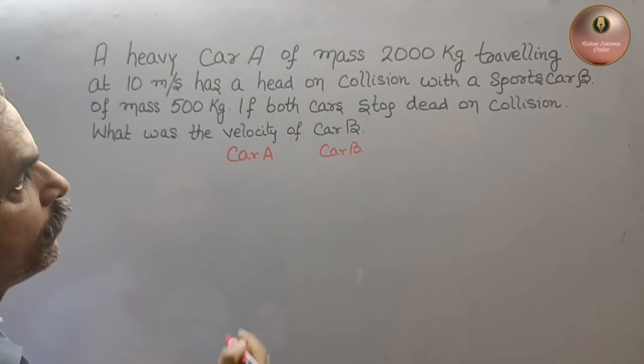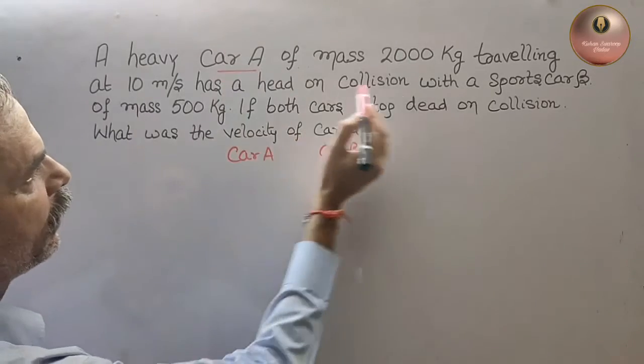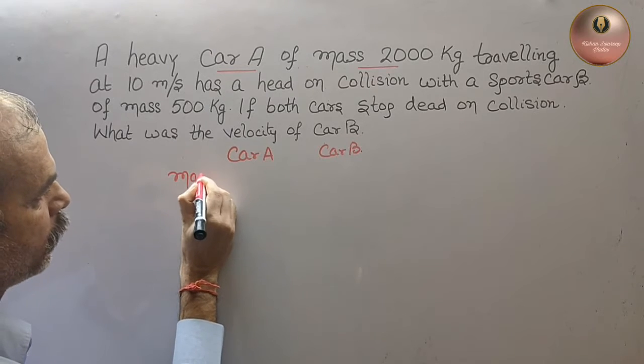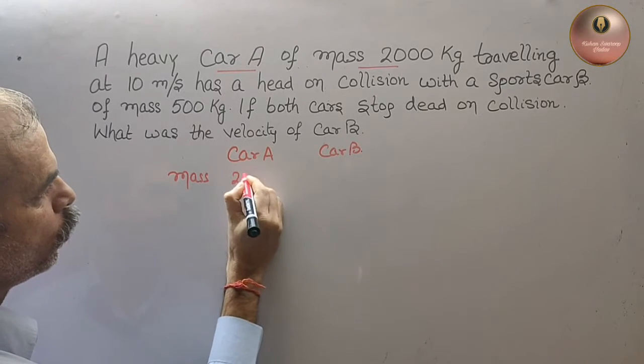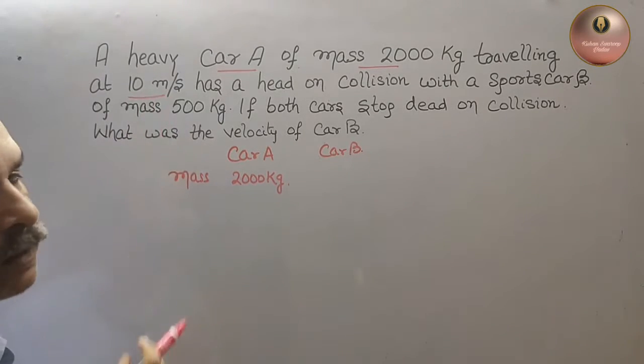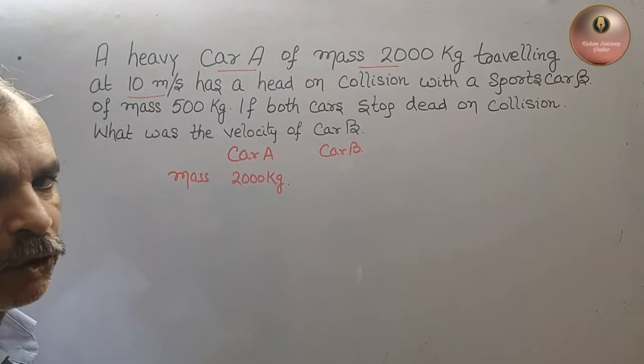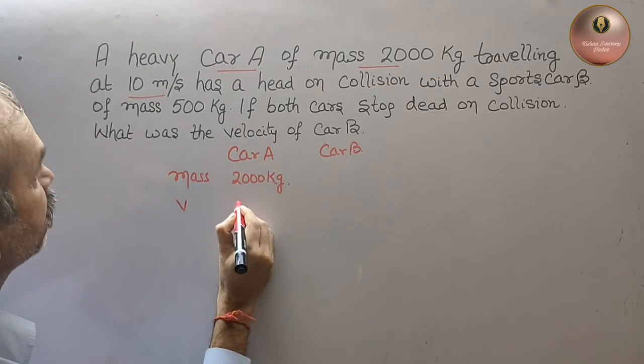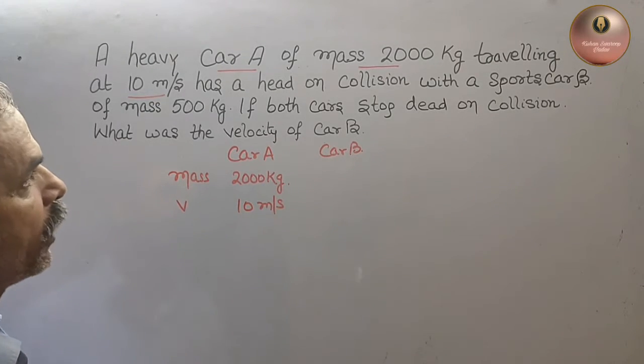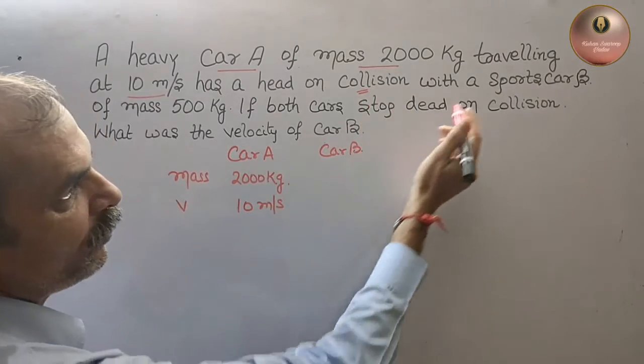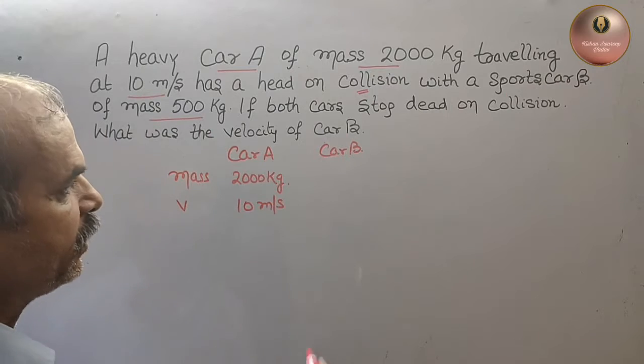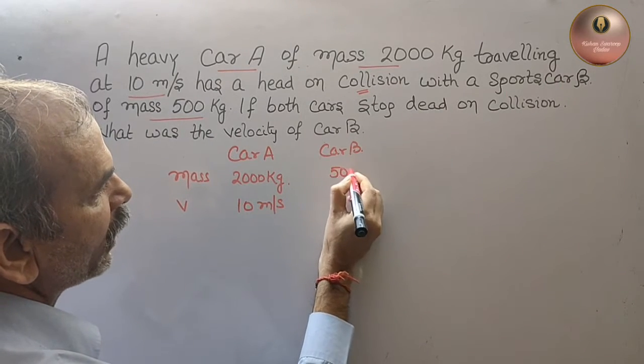Let's write what we have. First, car A: mass is 2000 kg, velocity is 10 meters per second. It has a collision with sports car B of mass 500 kg.